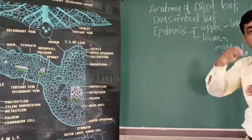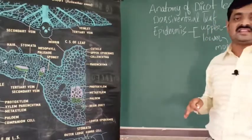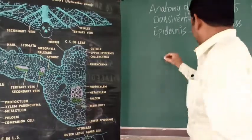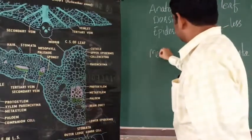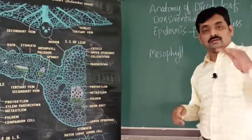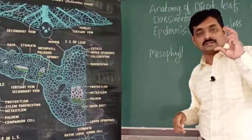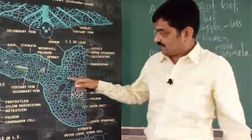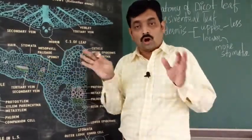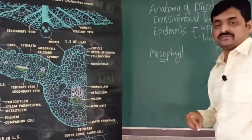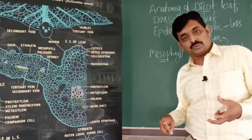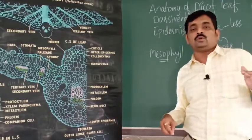Between upper and lower epidermis there is a tissue called mesophyll. Mesophyll is the parenchymatous tissue present between the upper and lower epidermis.